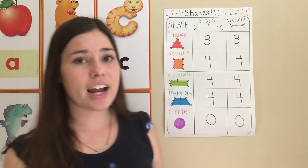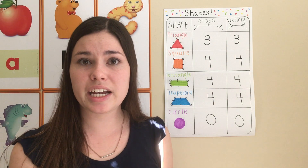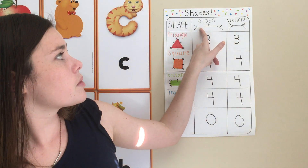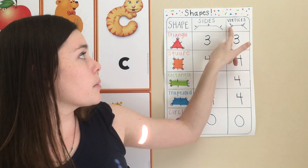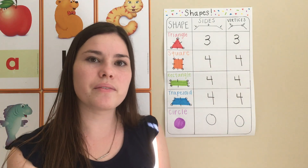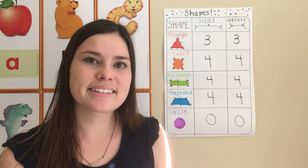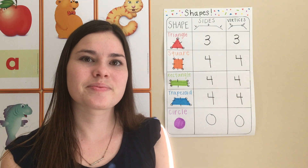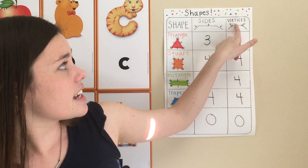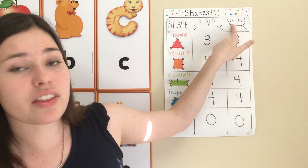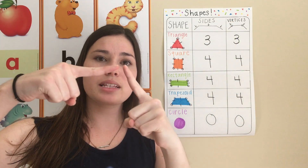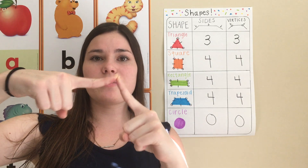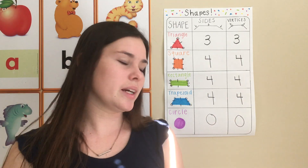And then we talked about their attributes or characteristics, which are things like how many sides they have and how many vertices. Who remembers what a vertex is? A vertex is the corners — whenever two sides meet to form a point, that is the vertex or corner.